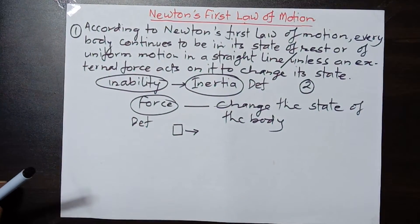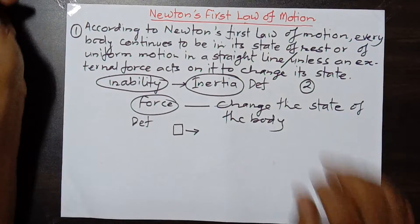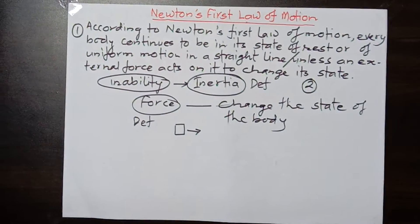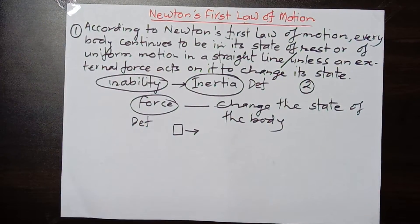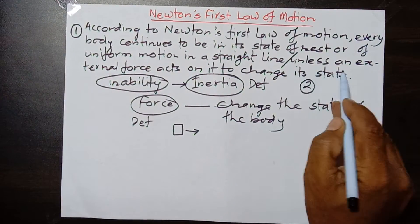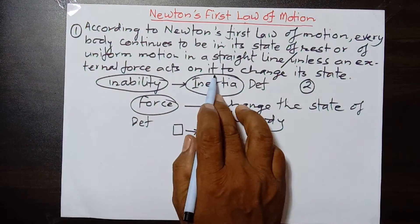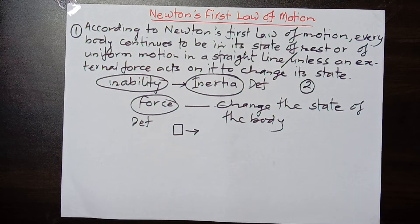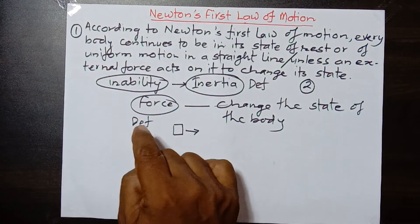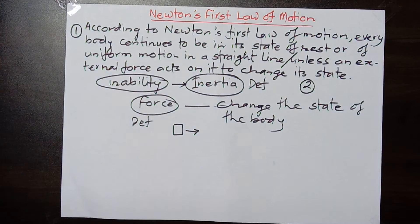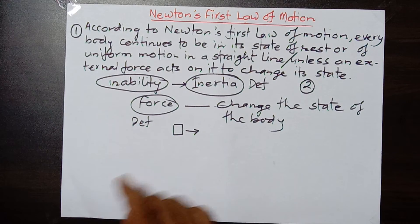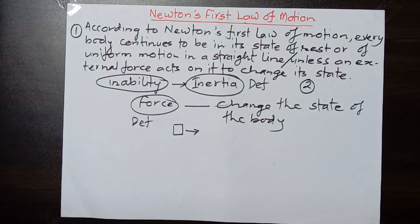That kind of inability contained in the body, whether it is at rest or in motion, is called inertia. Now regarding the definition of force: unless an external force acts on the body, it doesn't change its state — if it is at rest it continues at rest, and if it is in motion it continues in motion. So force is an external agent which can change the state of rest or motion of the body.